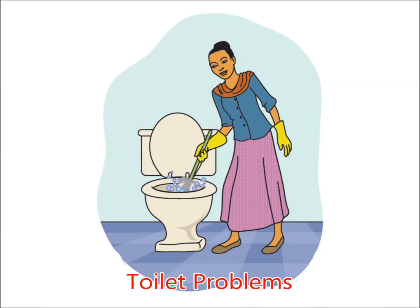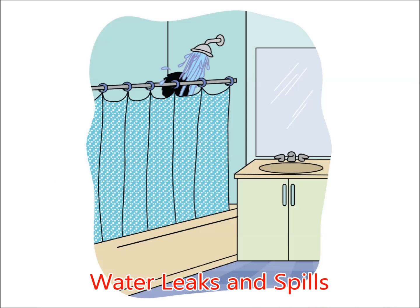Toilet problems. Use a brush to clean inside the toilet. Do not use the toilet brush for anything else. Never flush female sanitary products, food, or large amounts of toilet paper down the toilet. If the toilet overflows, call your landlord immediately. Water leaks and spills. Keep the shower curtain inside the bathtub and always clean up water on the floor. Do not allow water to escape onto the floor because it can cause flooding and water damage.